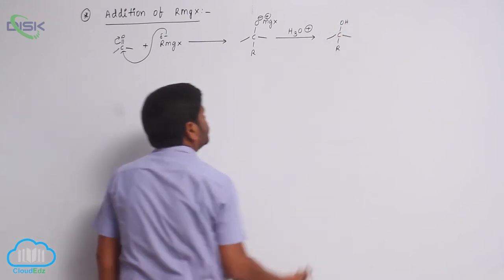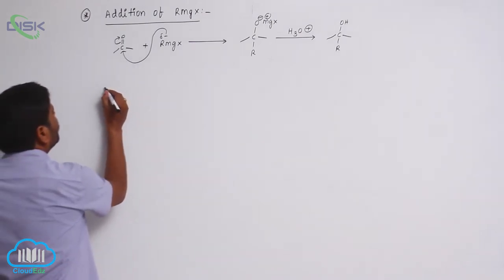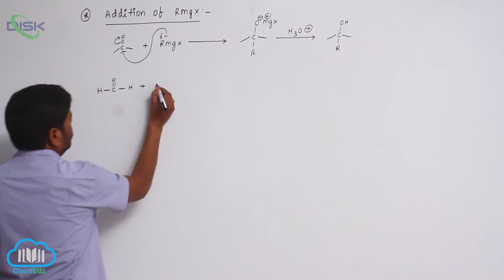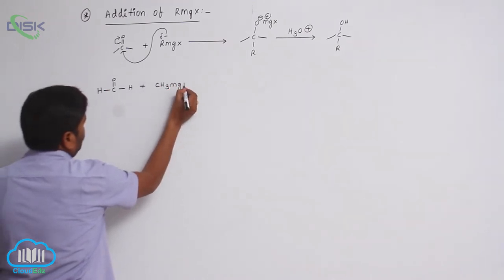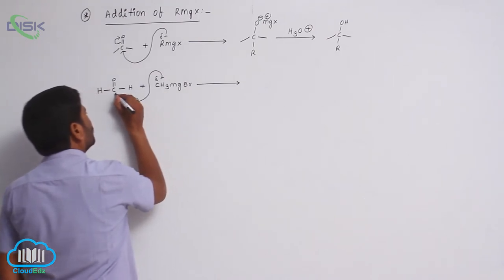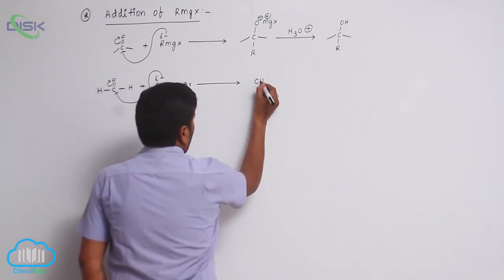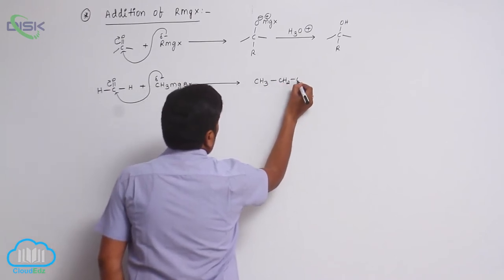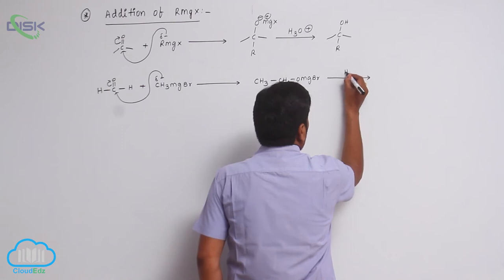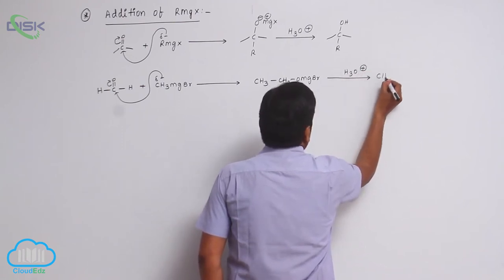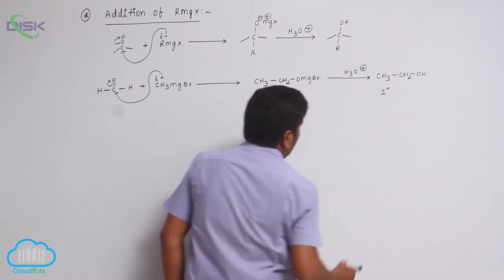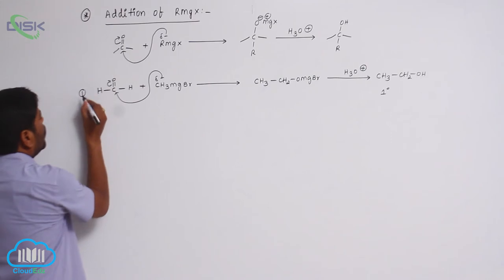For example, when formaldehyde reacts with methyl magnesium bromide, it forms CH2-OMgBr, then acidic hydrolysis gives a primary alcohol.